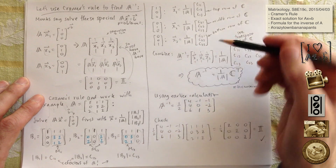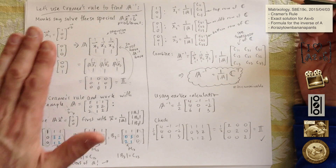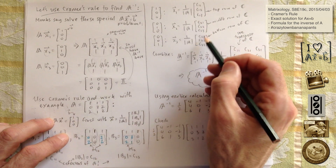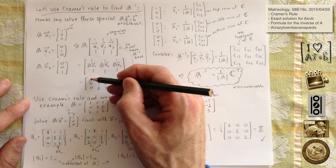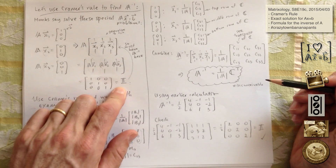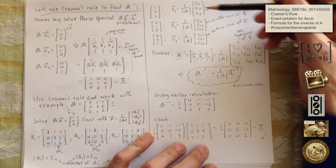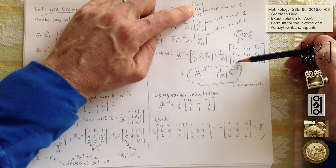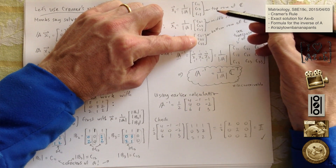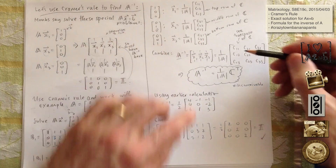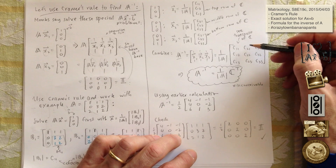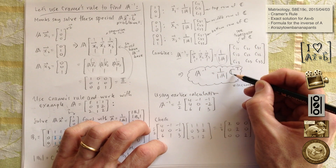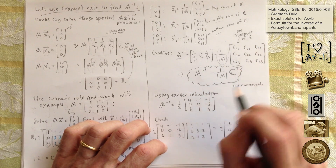So the inverse of A — sticking these solutions together, since a times them gives us the identity — each one has det(A) at the front. Here's the first column, second column, third column. They are actually the rows of the cofactor matrix, so the first column is the first row of the cofactor matrix, and so on. That means we have a transpose. So the inverse of A is one divided by the determinant of A, multiplying the transpose of the cofactor matrix. That is bananas.